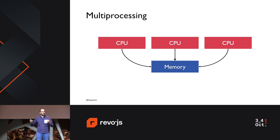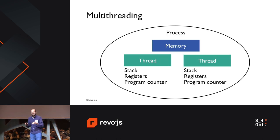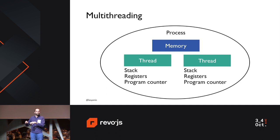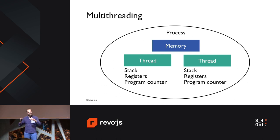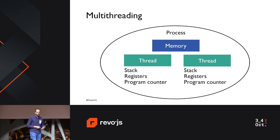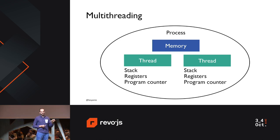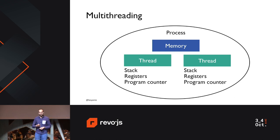Multi-threading is inside a single process where we create small threads of execution that are separate and almost independent — each thread has a stack, register, and program counter — but they do share the memory of the process. That's a very important concept we will look at in a while.